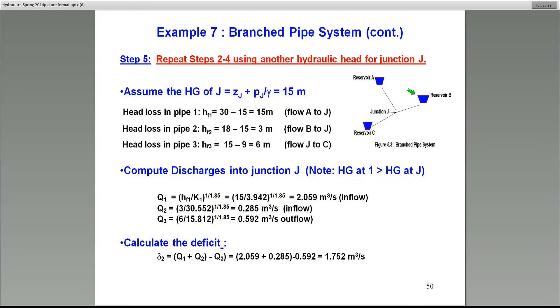So therefore, in this case, the flow from reservoir A and B is feeding into reservoir C. So when I calculate the flows, I will show you how to handle that part. But in this case, let's do the head losses first. Head loss in pipe number 1 is 15 meters, 3 in pipe number 2, and 6 in pipe number 3. That comes directly from the assumed hydraulic head at junction J, which is 15 meters.